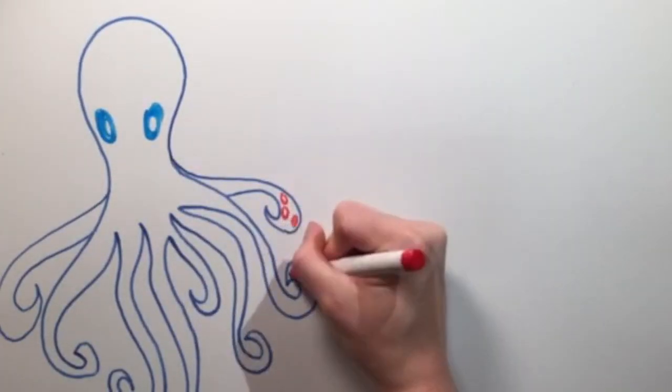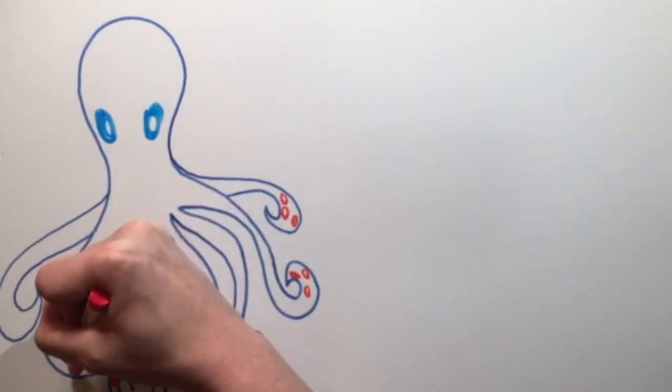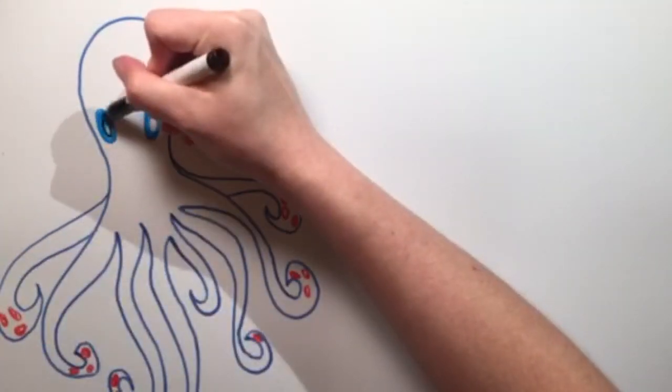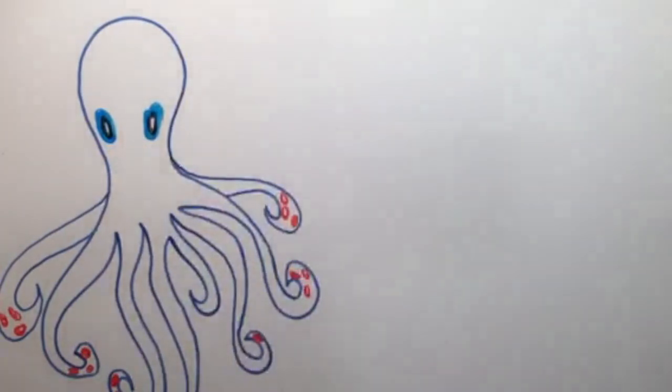As well as taste, octopuses can also smell with the end of their arms. Their eyes have evolved to let in various amounts of light and it is possible that their sight is what controls their ability to change color. They can even sense light using only their skin.